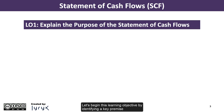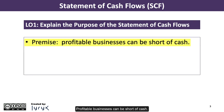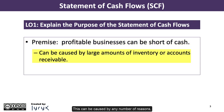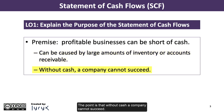Let's begin this learning objective by identifying a key premise related to profitability and cash flows. Profitable businesses can be short of cash. This can be caused by any number of reasons, such as large amounts of inventory or accounts receivable. The point is that without cash, a company cannot succeed.